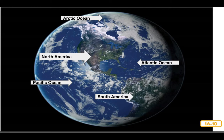People haven't always known that the earth is round or that it rotates on its axis and orbits the sun. They haven't always known that there are five oceans and seven continents, or that most of the surface is covered in water. It took hundreds of years for scientists and explorers to develop all the knowledge about the earth just described. But this barely begins to scratch the surface of what we now know about the history of earth.